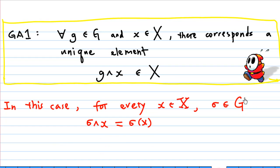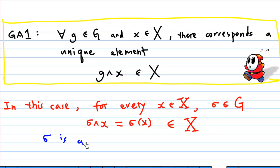How do we verify that this is really a group action? Let's check GA1, which says that g * x must belong to the set X. For every element x and sigma belonging to G, sigma * x equals the image of x under sigma, and this belongs to the set X. The reason is because sigma is a permutation on X.